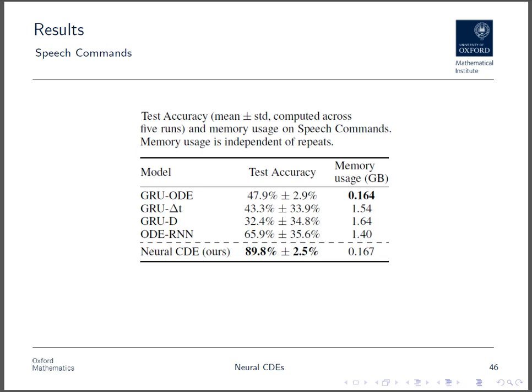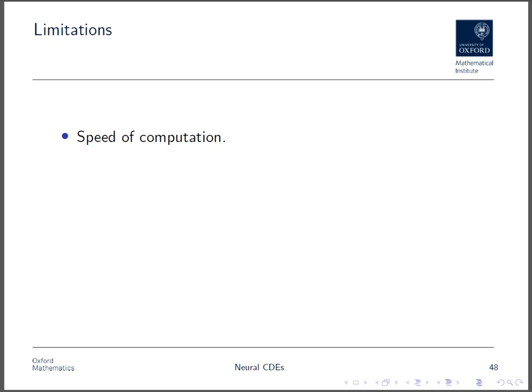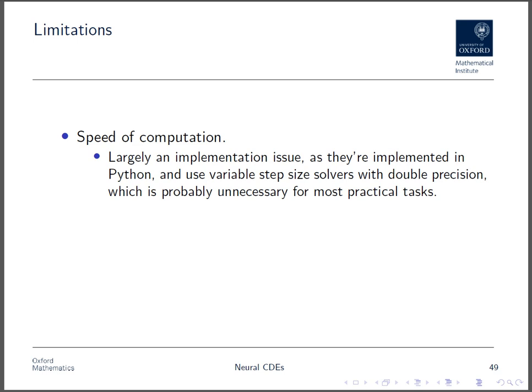But, let's be fair here. What are the limitations of a neural CDE model? The first is the speed of computation, as they can be a few times slower to compute than similar recurrent neural network models. However, we think this is largely an implementation issue, because neural CDEs are currently implemented in Python, and by default use variable step-size solvers with double precision arithmetic, which is probably overkill for most practical tasks.